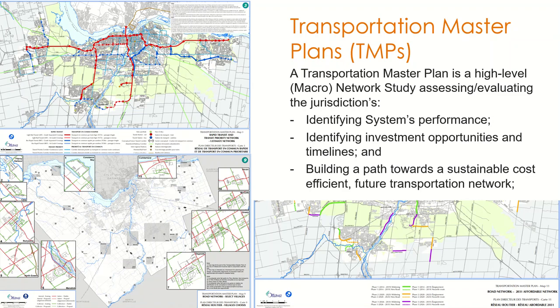The snapshots on screen are extracted from Ottawa's TMP. The first describes the future transit network, shown in the top left corner. The bottom left shows different transportation improvements happening within Ottawa's jurisdiction but outside its borders. To the bottom right is the transportation improvements to the roadway network and the future ultimate horizon within the city's central district.